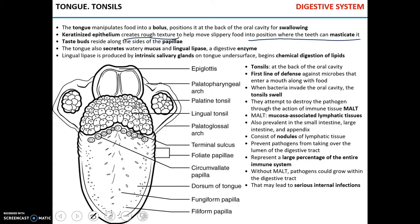The tongue is also an important secretory organ. It produces watery mucus and the enzyme lingual lipase, which starts the breakdown of lipids — it chemically digests lipids. This lingual lipase is produced by unicellular intrinsic salivary glands on the surface of the tongue.